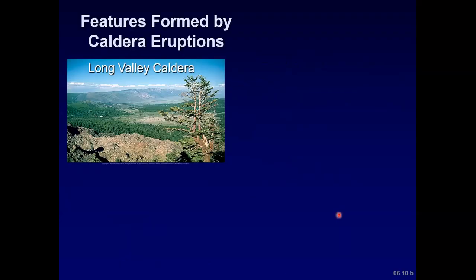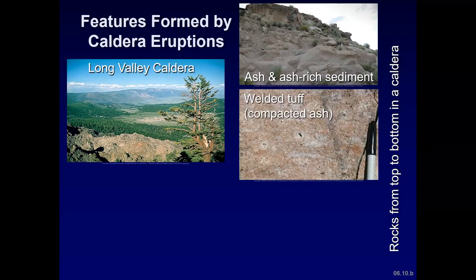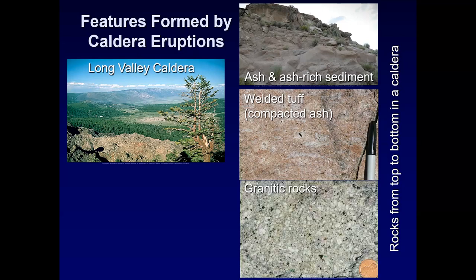Looking at the Long Valley Caldera, we can examine rocks from top to bottom. Ash-rich sediment formed from pyroclastic eruptions as the magma chamber emptied. Below that, you can have welded tuff or welded ash, where ash and pumice welded into hard rock with fragments from the caldera walls. And below that, granite forms in the subsurface as finely crystalline material in the magma chamber.